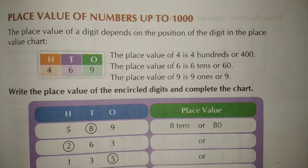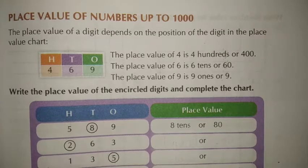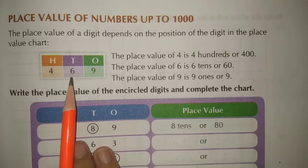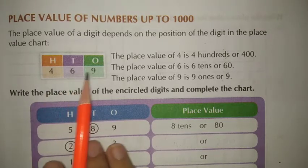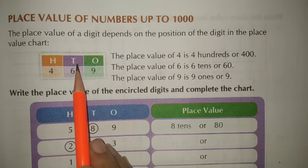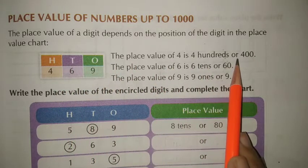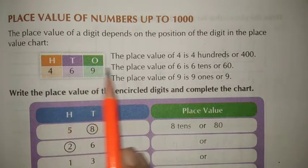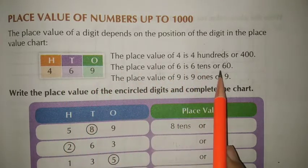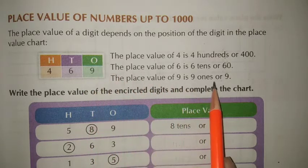Koi bhi digit ki place value iske position ke upar dependent hoti hai. Jaise ki aapko value chart diya hai — 469: so 9 ones, 6 tens, and 400. The place value of 4 is 400, the place value of 6 is 60, and the place value of 9 is 9.